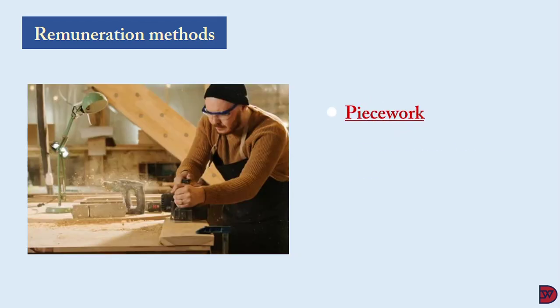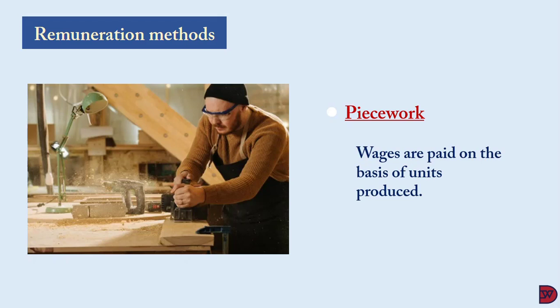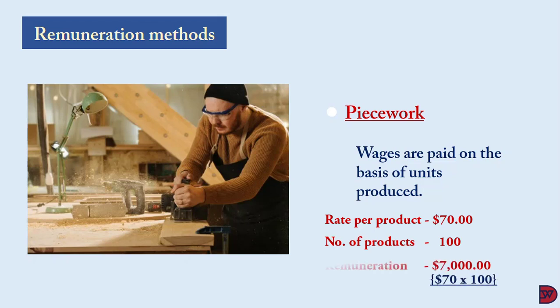The second remuneration method is piece work, where wages are paid based on the level of output. An employee will be paid an amount — let's say seventy dollars per unit of production — so if they produce 100 units within a week, they will be paid seven thousand dollars (that is seventy dollars per unit times 100 units).